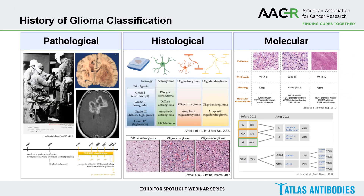In order to understand glioma biology, I want to take you back to the history of glioma classification. This started with the pathological-based classification, attributed entirely to Harvey Cushing and Percival Bailey. They detailed thousands of gliomas by size, grade, and location, and almost a century laid the foundation for the histological classification of gliomas, with the help of the first three editions of the World Health Organization classification of CNS tumors.